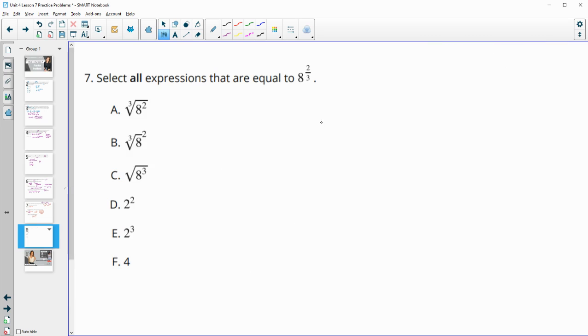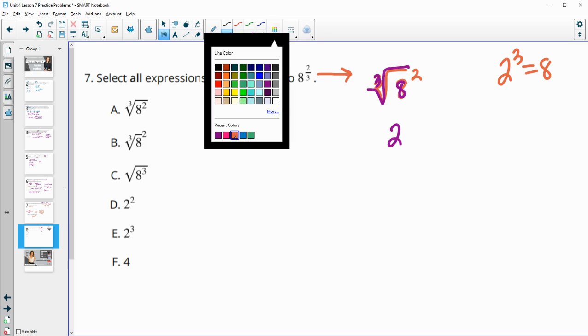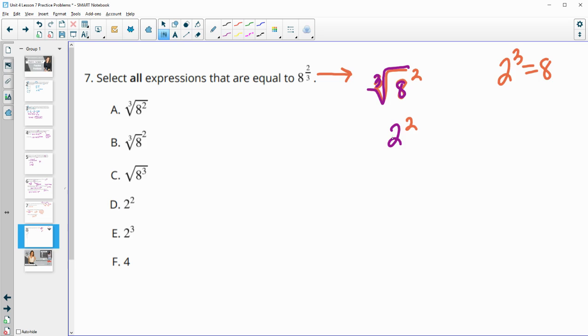Number 7: select all expressions that are equivalent to 8 to the 2/3 power. First I like to rewrite this a couple of ways. I'm going to take the 3 and make it into a root, so I know it can be written like this with the 2 either under the cube root or outside of it. I also know that 2 to the third power is 8, so the cube root of 8 is 2. This part is equal to 2. This expression is equal to 2 squared or equivalent to it, and 2 squared is 4. Cube root of 8 squared is definitely true, and cube root of 8 with the squared outside is true. Square root is not. 2 squared we saw, so this is good. 2 to the third, no. 2 squared is 4, so 4 is also equivalent.